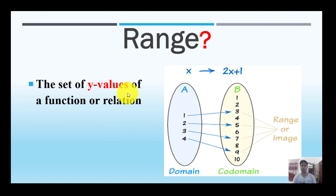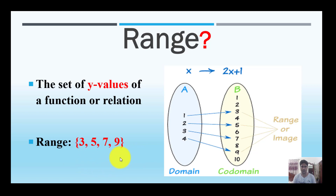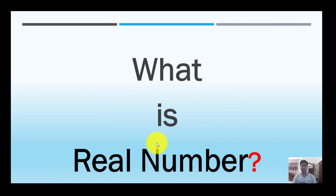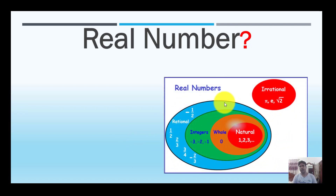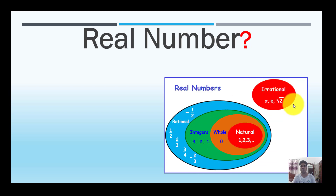The range is the set of y values of a function or relation. For example, the set of y values could be {3, 5, 7, 9}, or {2, 9, 3, 1}. These values belong to the real numbers, which include rational numbers. A rational number is any number of the form p over q where q is not equal to zero.